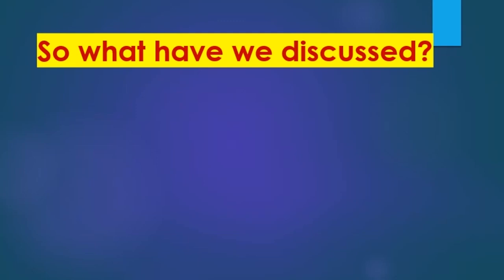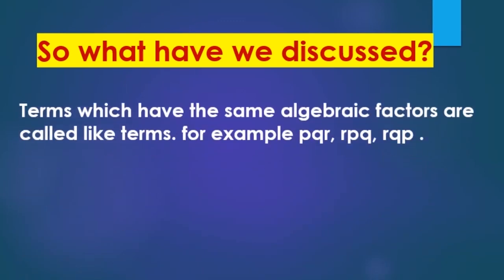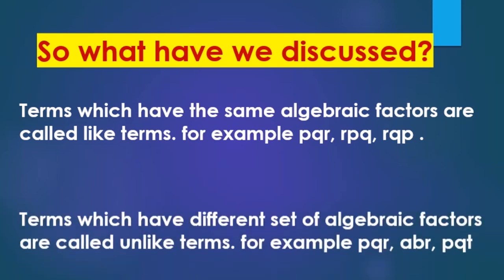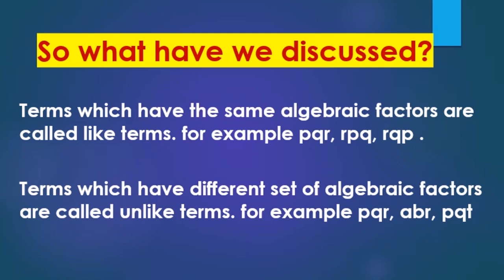I hope you have understood about like terms and unlike terms. Tanya, can you explain? Yes ma'am. Terms which have the same algebraic factors are called like terms. For example, pqr, rpq, rqp all have the same factors: p, q, and r. Terms which have a different set of algebraic factors are called unlike terms. For example, pqr, abr, pqt — in pqr the factors are p, q, and r, while in abr they are a, b, and r, which are different.